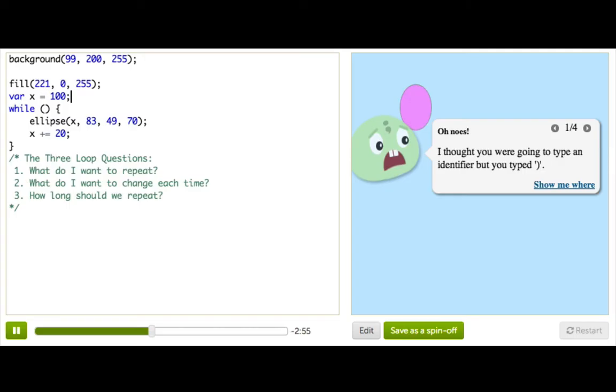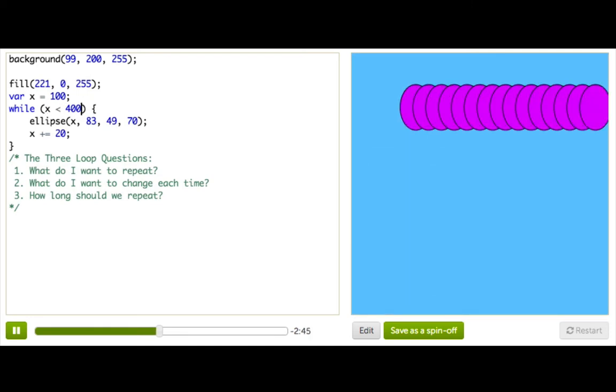Okay, well, so, now our third loop question is how long do we want to repeat? So, we can think that maybe we want to just keep going until we're basically run off the side of the screen. So, maybe all the way until x is less than 400. So, now, this is cool because something's happening, right?